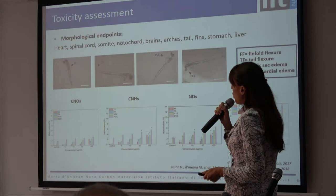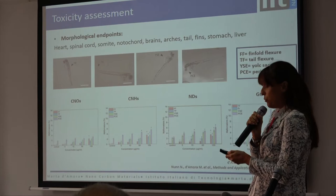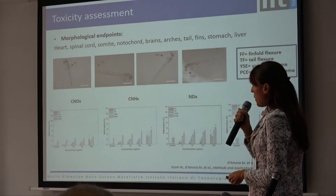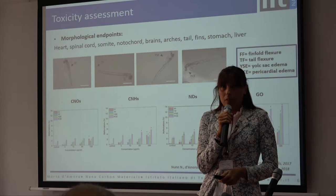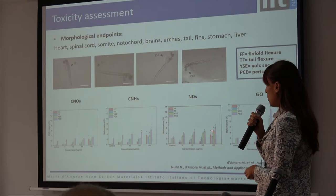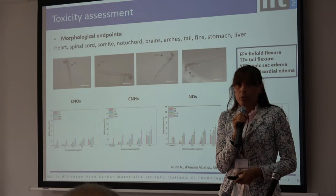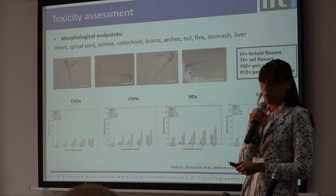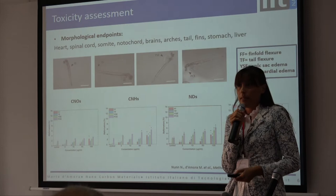We also evaluated the possible morphological defects induced by the four different nanomaterials. As you can see from the plot, for carbon nanodots, nanohorns, and nanodiamonds, increasing the concentration results in an increase in malformation, reaching a value of 6% in the case of nanodiamonds — the violet column — for pericardial edema. This low value indicates the biosafety of the three carbon nanomaterials. On the contrary, graphene oxide induces a high percentage of malformation, reaching 15% at the same concentration, indicating the toxicity of this nanomaterial.